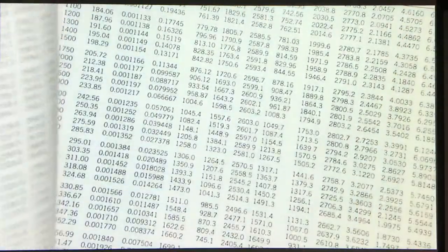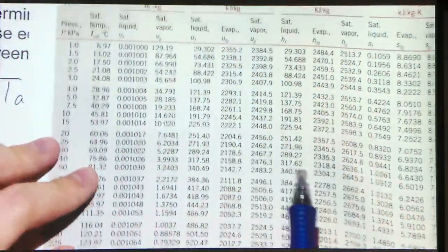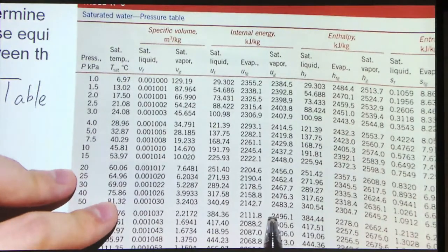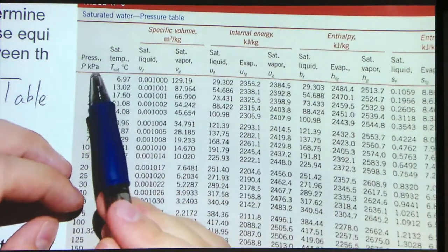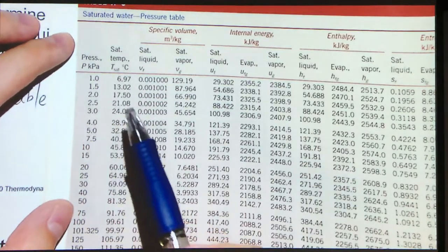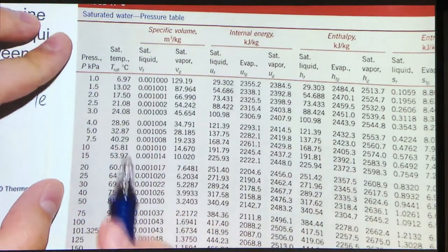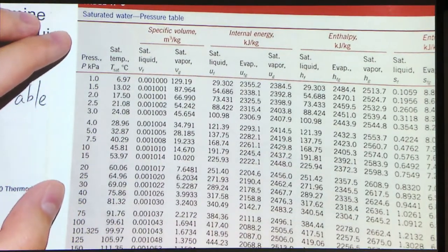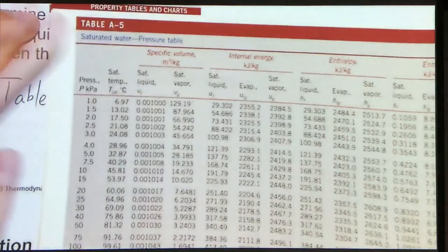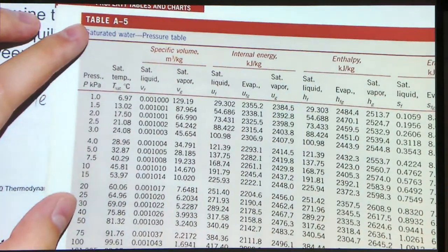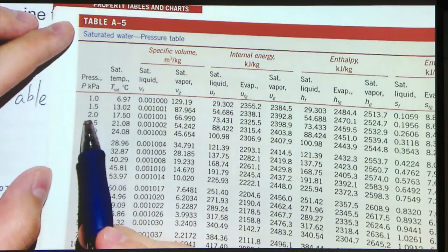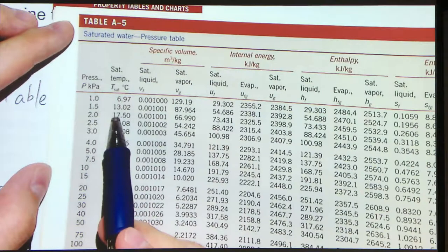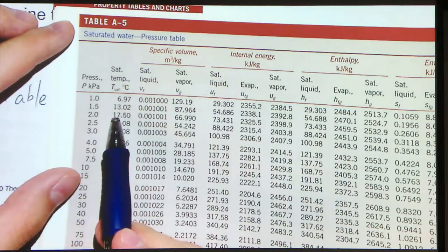Table A5 is here. To find out the saturated temperature, we focus on the pressure and temperature columns. What we need to find is the saturated temperature at 1.902 kilopascal. But we do not have that exact value in the table — we just have 1.5 and 2 kPa. How can we find the temperature at 1.902 kilopascal?